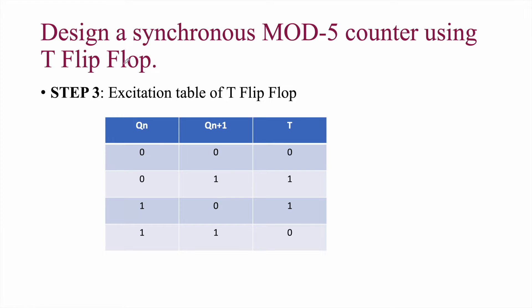Step 3: since the question is to design a synchronous mod-5 counter using T flip-flop, we write the excitation table of the T flip-flop. When present state is 0 and next state is 0, or present is 1 and next is 1 (no change), T equals 0. When present is 0 and next is 1, or present is 1 and next is 0 (toggle), T equals 1.